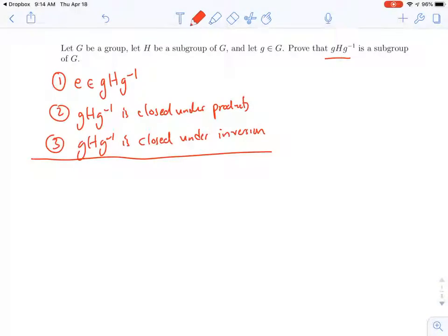So first one is very straightforward because we know that e is an element of H, because it's a subgroup of G. And so, well, e could be written as geg inverse, right? The e goes away, and then you just have g times g inverse, and this is an element of gHg inverse. So e is an element of gHg inverse.